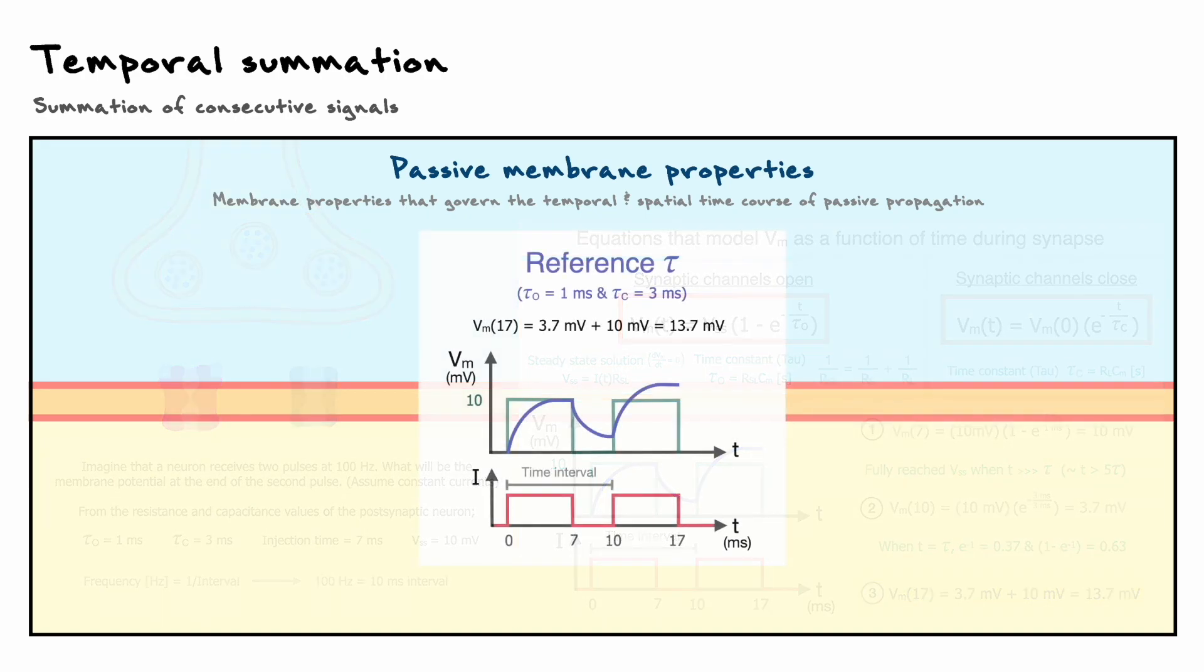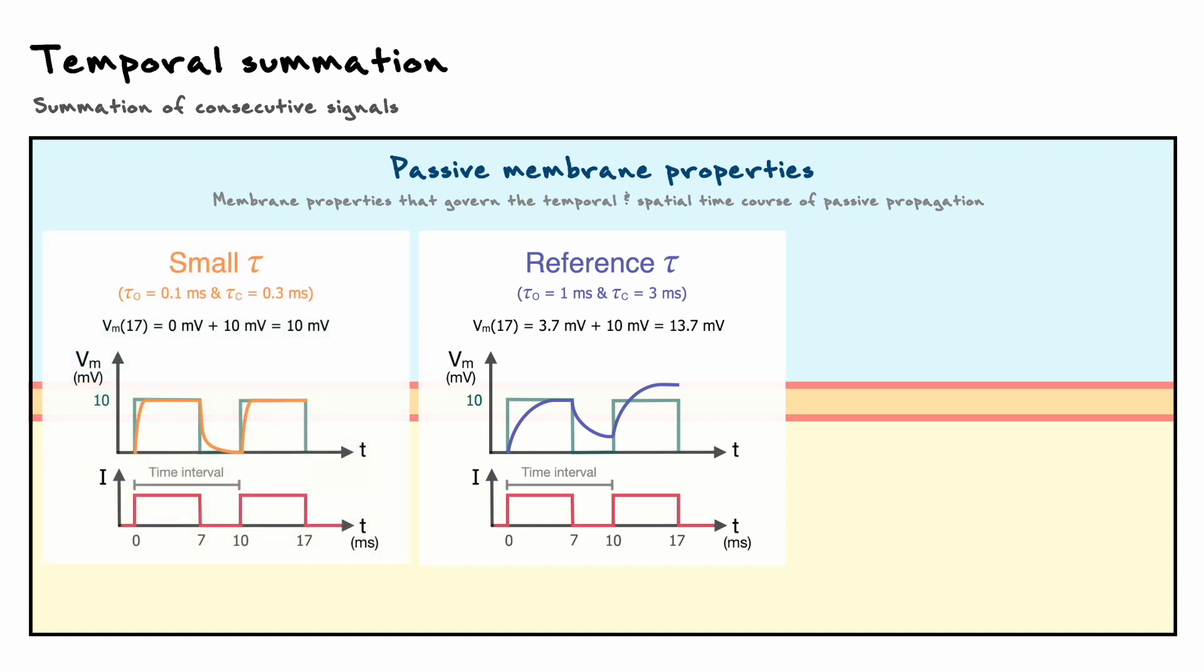To end our discussion on temporal summation, I want to briefly discuss the time constant. As we've seen in the problem, the time constant gives us a good estimate of where the decay and growth parts might end up. Now if in this problem, the open and closed time constants were something small, let's say 0.01 ms and 0.3 ms, you can see that the results are drastically different. Indeed, the time constants for the growth and the decay are so quick, relative to the current injection, that no summation can even occur.